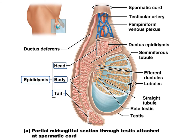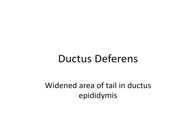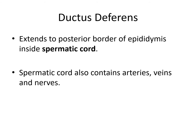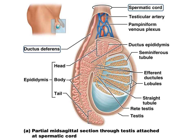Sperm move from different areas of the epididymis — from the head to the body to the tail of the epididymis. Then it goes to the ductus deferens, which is the widened area of the ductus epididymis, and it extends into a spermatic cord that also contains arteries, veins, and nerves. Here you can see the spermatic cord where the ductus deferens extends into, along with arteries, veins, and nerves.